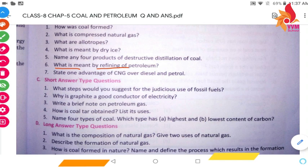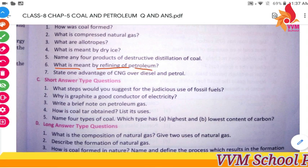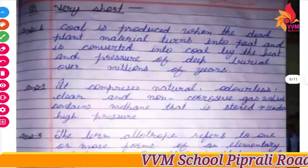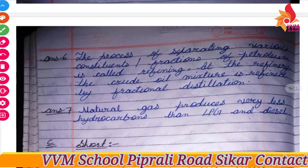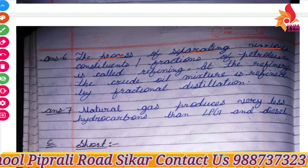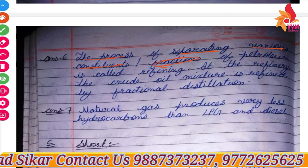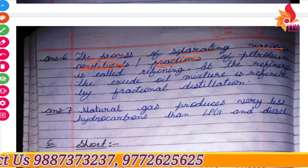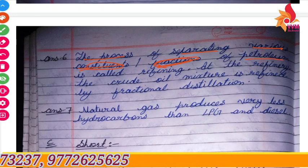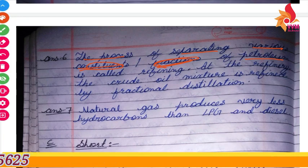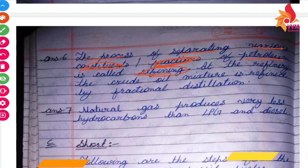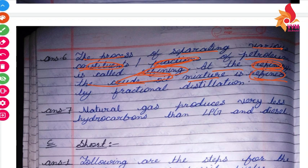What is meant by refining of petroleum? The process of separating the various constituent fractions of petroleum is called refining. It is carried out at a refinery where the crude oil mixture is refined by fractional distillation.